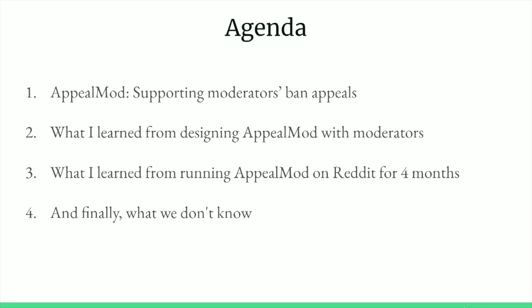Once you ban somebody, you also need to give them a chance to come back if they've realized their mistake, or if the moderators made a mistake. You always need some mechanism to make sure those decisions can be corrected and users get a chance to have their say in the process. There are also broader things I learned that would be relevant to designing tools for communities or with Reddit moderators, and I'll end with an emphasis on what we still don't know.